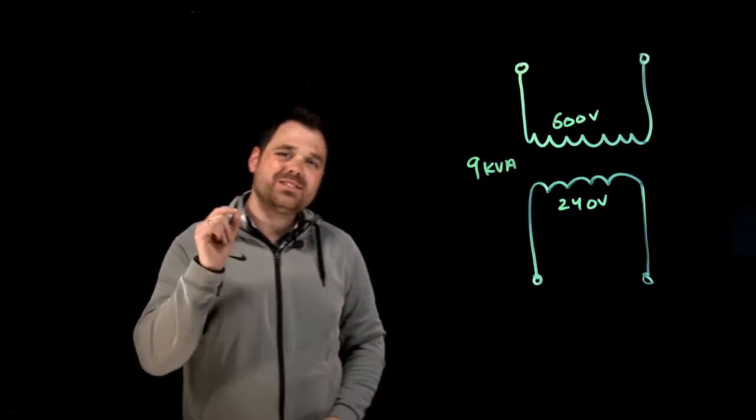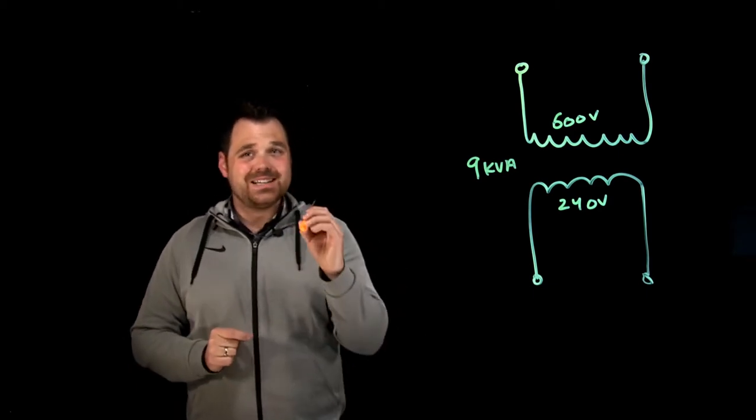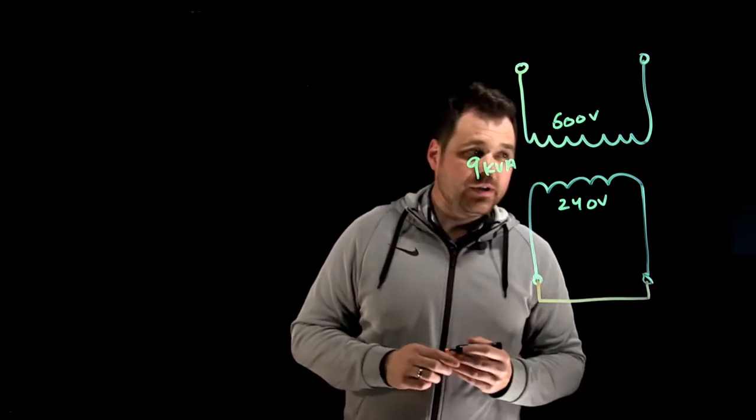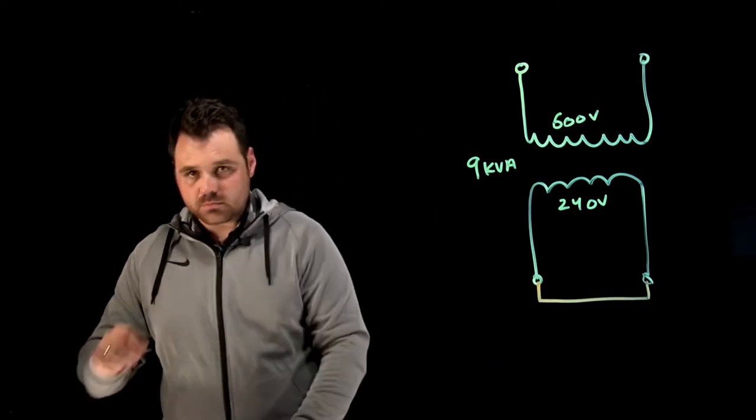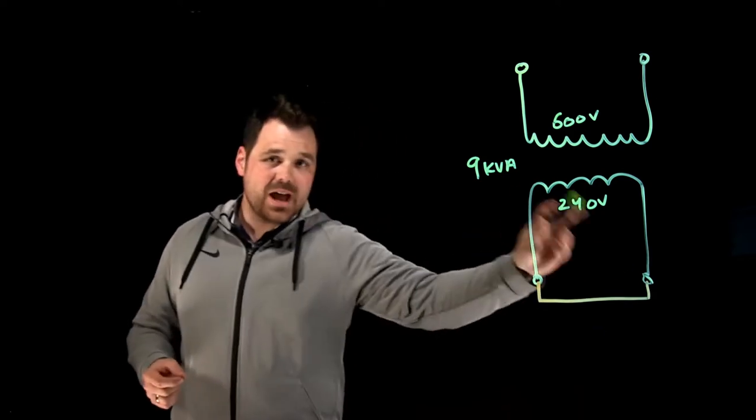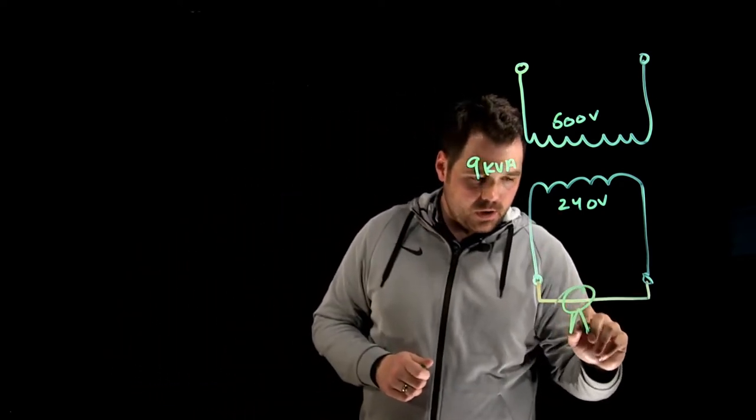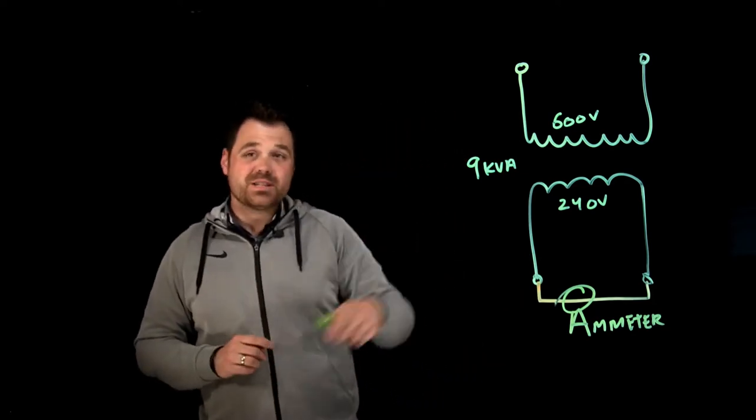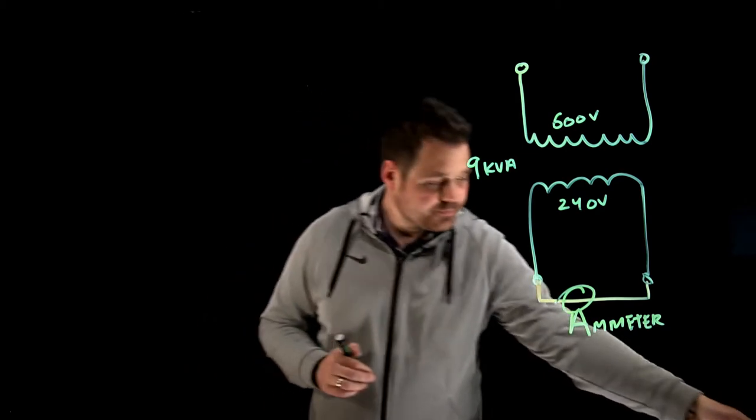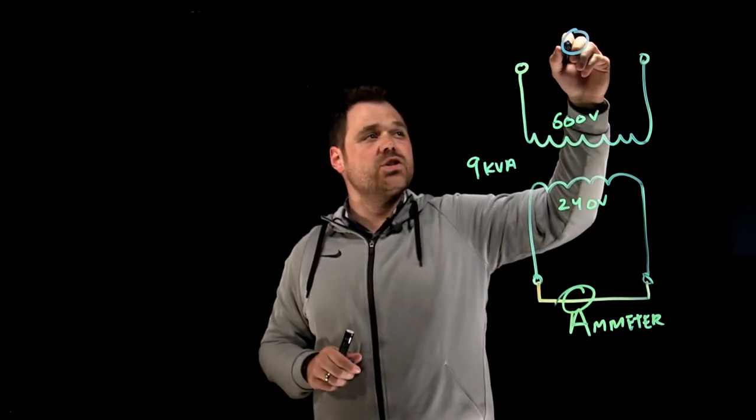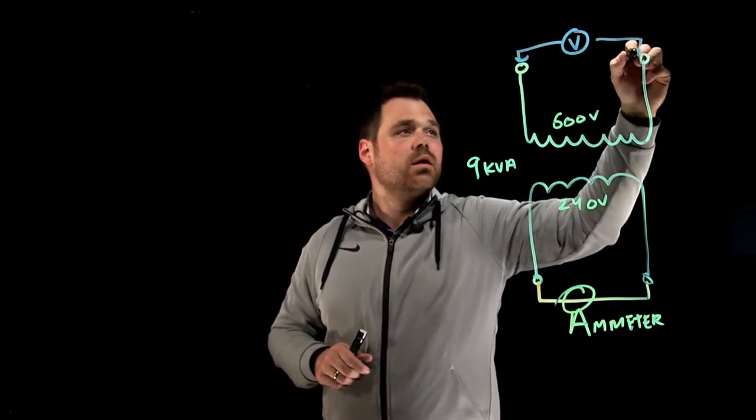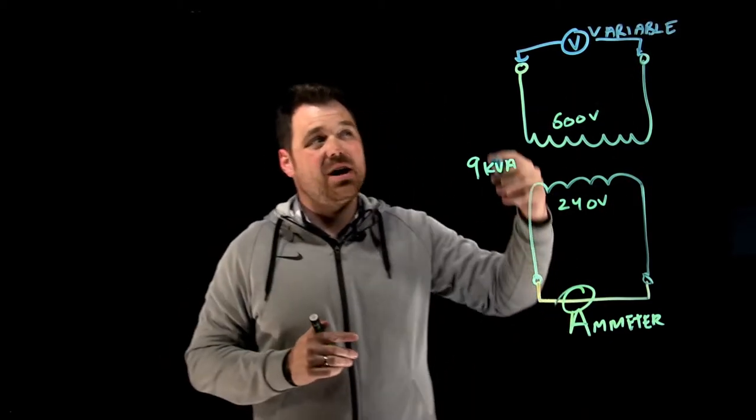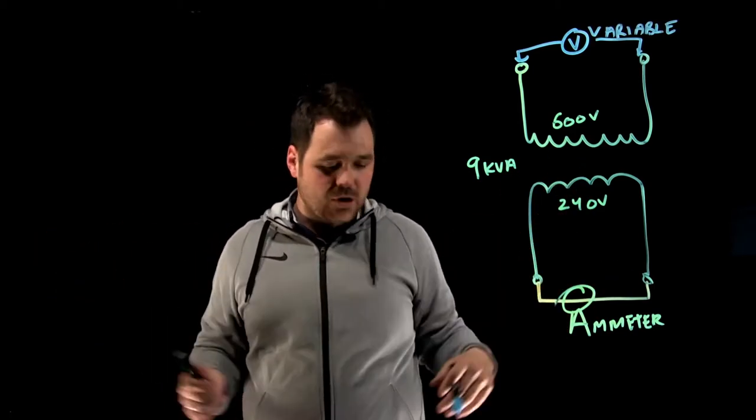So what you do in order to calculate your percent IZ or your percent impedance is you do what's called a short circuit test. So I'm literally going to short circuit my secondary. So I short circuit my secondary, just like that. And I take my ammeter. Now, what I'm waiting for on my ammeter is my rated current. What I do on my primary is I'm going to take a variable voltage. So this is a voltage supply and it is variable. Now, with that short circuit, obviously, if I applied rated voltage, I would have huge current, I'd burn out my transformer. But what I want to do is on this ammeter, I'm looking for my rated secondary current.